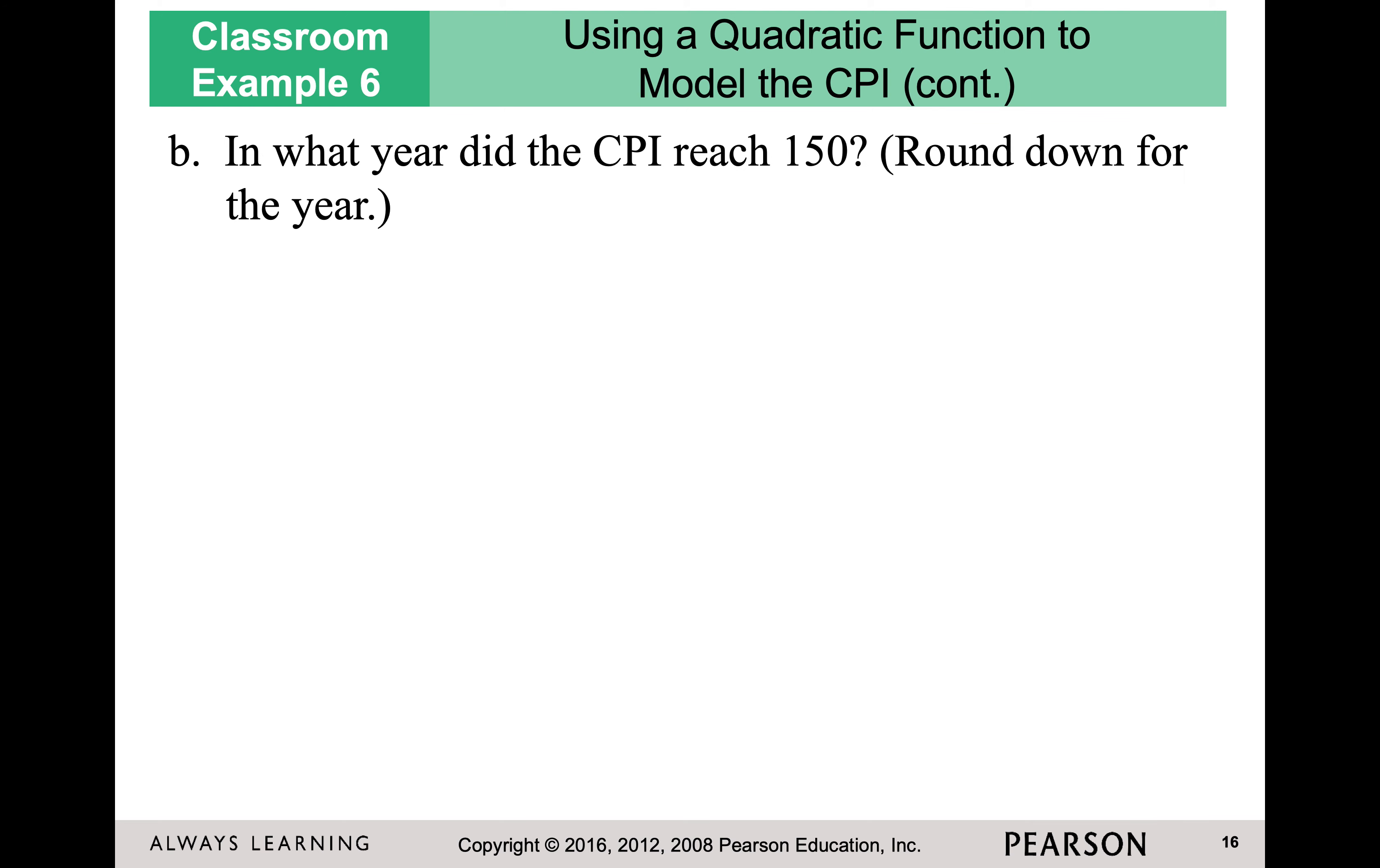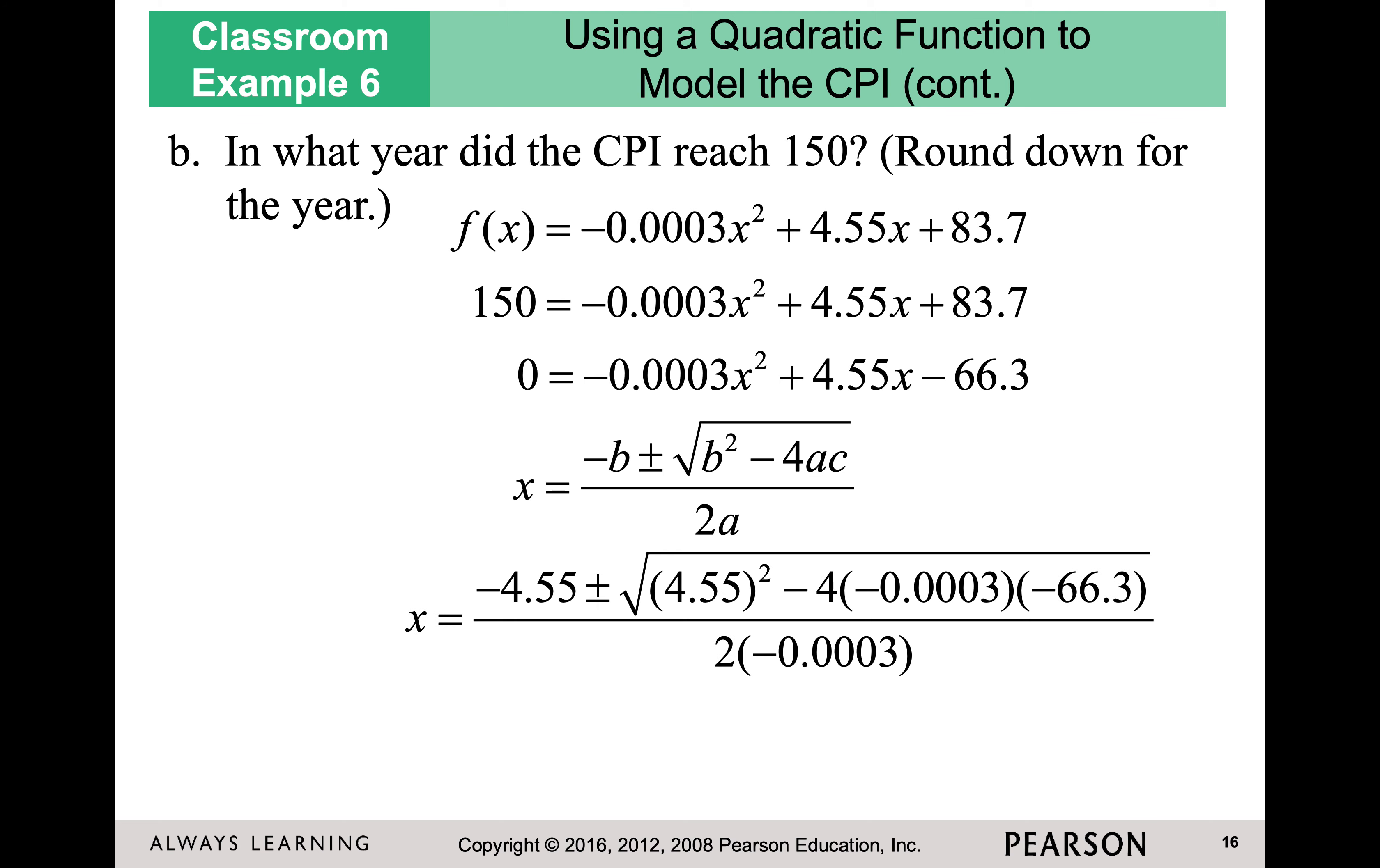In what year did the CPI reach 150 means I am setting it equal to 150, not plugging in 150, because I want to know what year. x is the number of years. I'm going to move that 150 over. Now I can use the quadratic formula. I could factor it, it'd be pretty tricky, but I could do it. And I'm going to be able to get 14.9. Why is there only one answer? Because if you get a negative number, you cannot have a negative year. So you're going to have to exclude the negative number there as well.